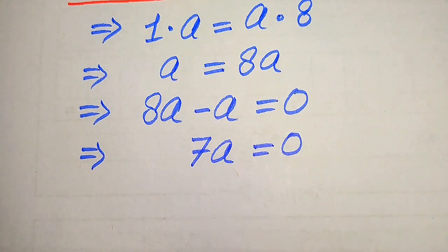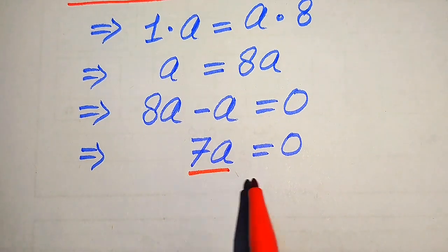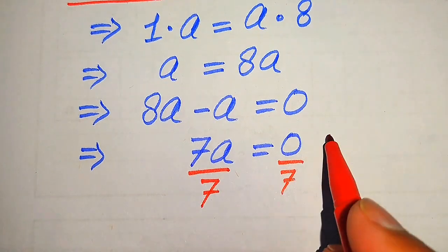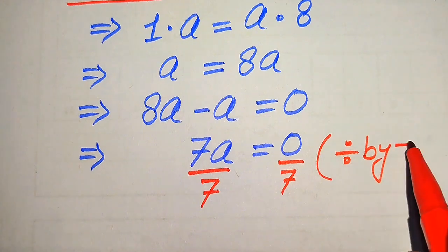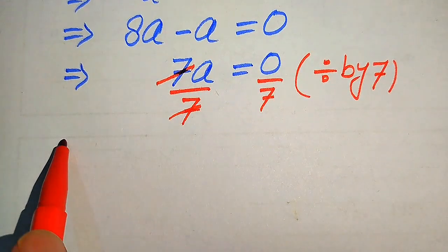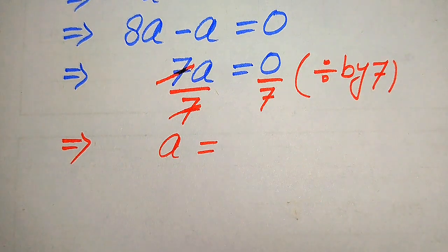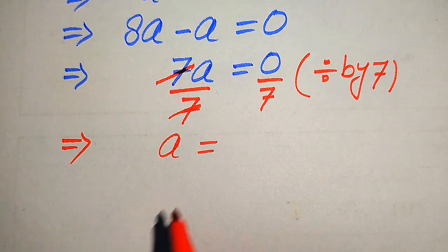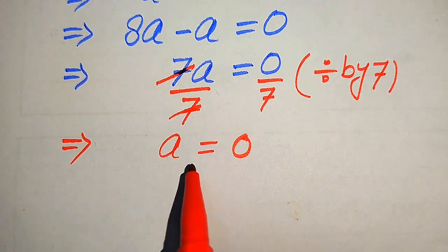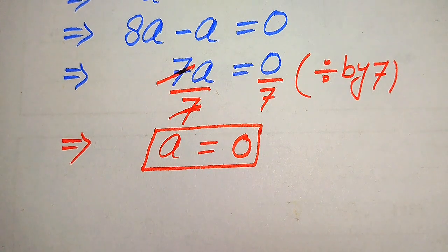Now, 8a minus a is equals to 7 times of a is equals to 0. Because we need to find the values of a, we divide both sides by 7. This 7 and this 7 cancel, and we get a is equals to 0 over 7. Since dividing 0 by any number always gives 0, we get a is equals to 0. This is the first root of the given equation.